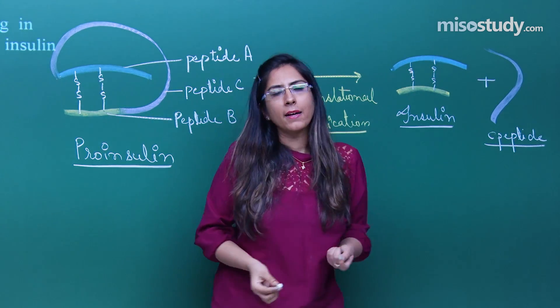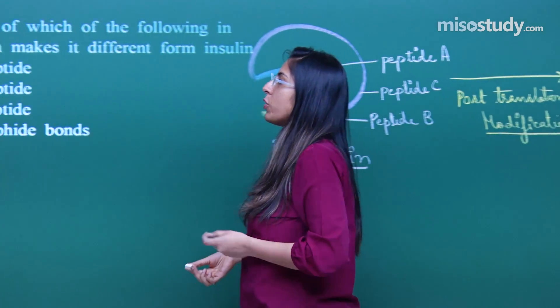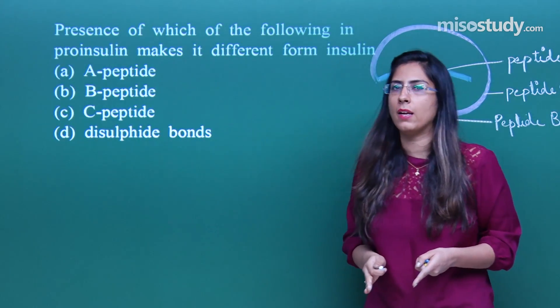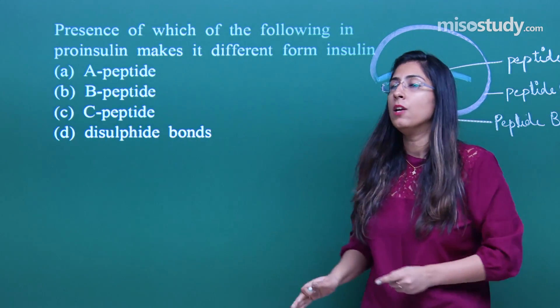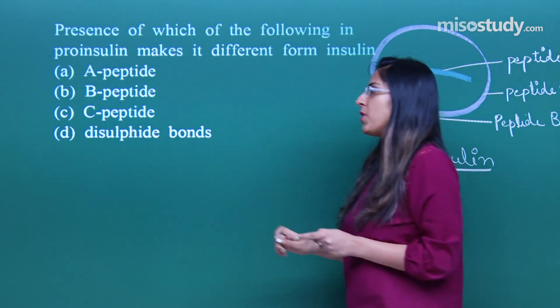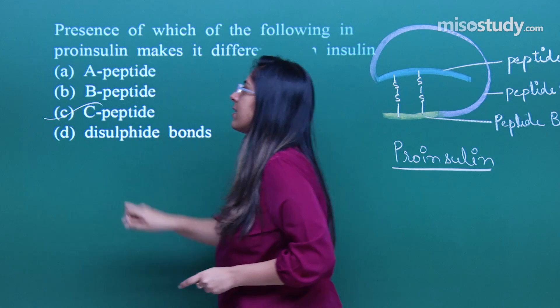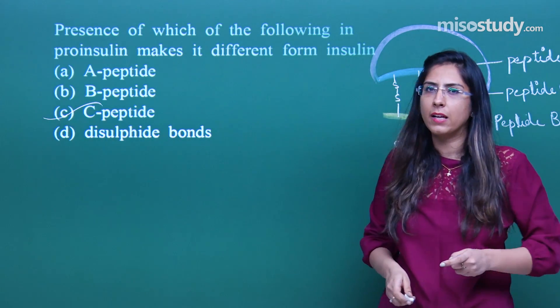Now let us come back to the question. In the question we have to find out the difference between the pro-insulin and the insulin. So the correct option is option number C which indicates the C-peptide is not present in insulin.